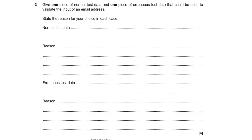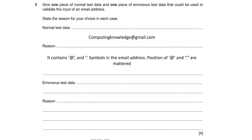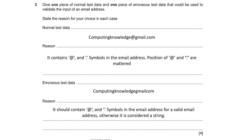Give one piece of normal test data and one piece of erroneous test data that could be used to validate the input of an email address. State the reason for your choice in each case. Normal test data: for example, computingknowledge@gmail.com. This is normal and valid data because it contains the '@' symbol and a dot, such as '.com' or '.uk'. Erroneous test data: for example, computingknowledgegmail.com — missing the '@' and dot after gmail. A valid email address must contain '@' and dot symbols; otherwise it is considered just a string.